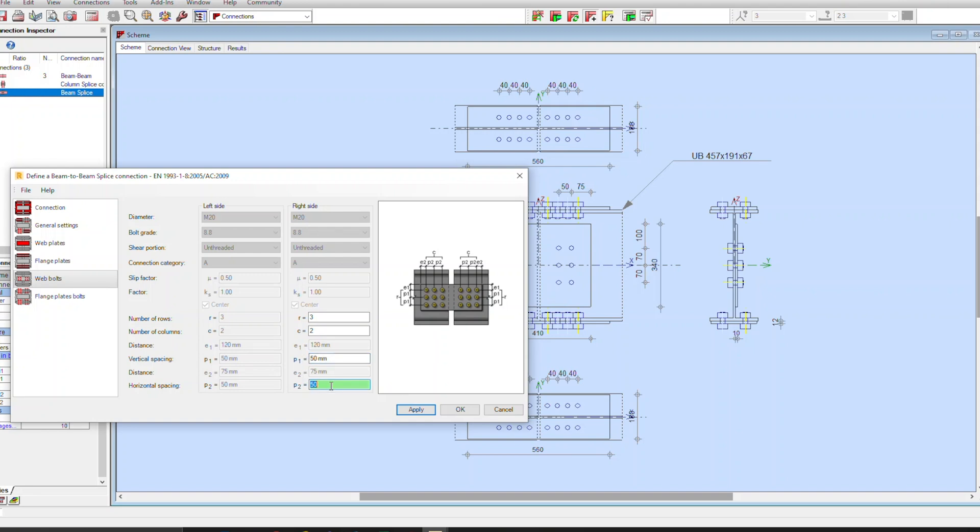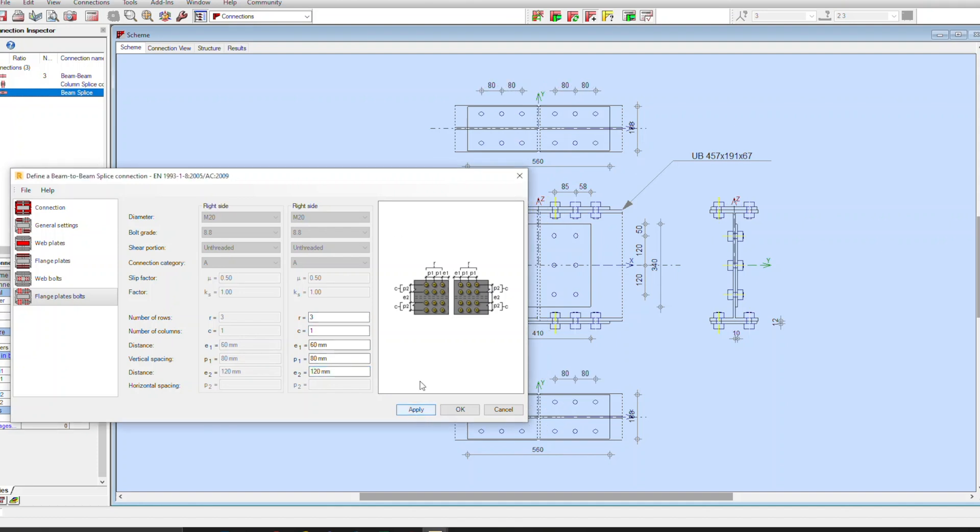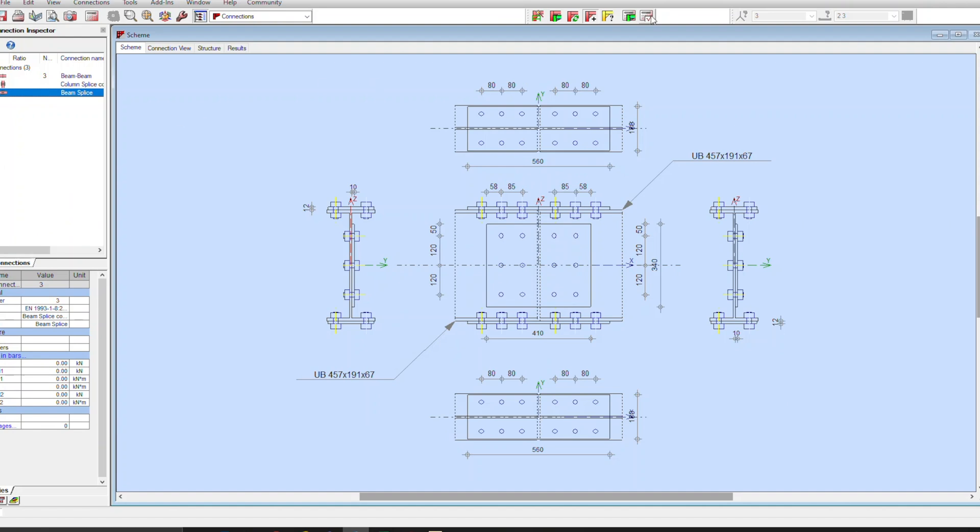You'll also need to find out from the contractor what the longest beam length can be transported on a lorry as that will also give you a constraint to think about. There are essentially two types of splices, bolted and welded. Welded is quite uncommon because site welding generally is not very accepted on construction sites because of the health and safety risks and hazards. That is why it's generally more preferable to use a bolted splice connection. So let's move on to the beam splice design example.